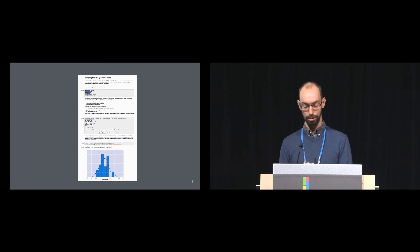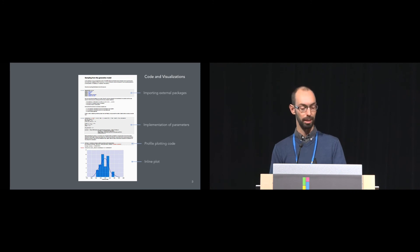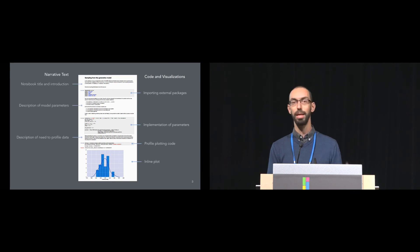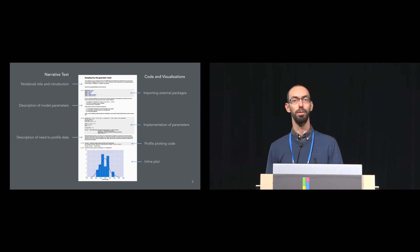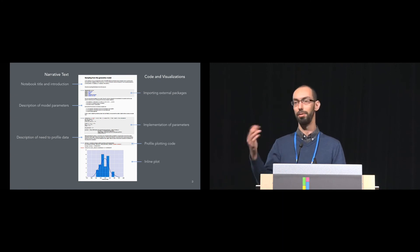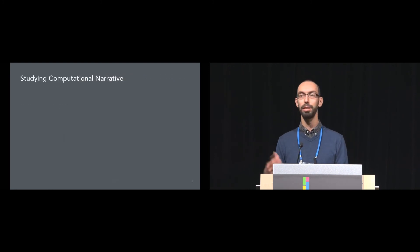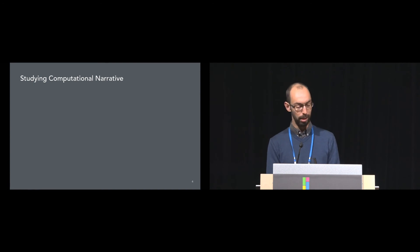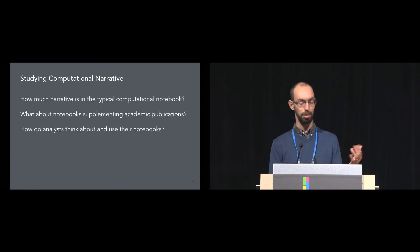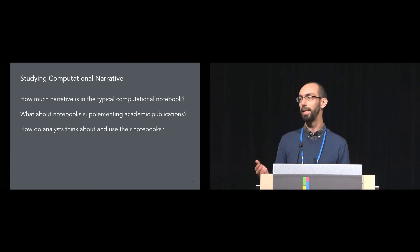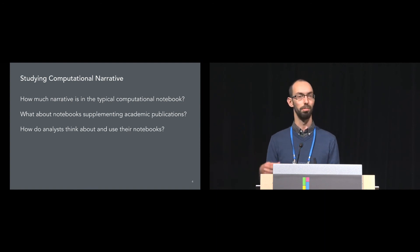Throughout the talk, I'll be calling these computational notebooks. At their core, they let analysts mix code and visualizations that they can write interactively, in line with narrative text describing what that code and those visualizations are doing. We wanted to know how people are using these — in particular, are they using them to write rich computational narratives, both to promote open science and greater flexibility in sharing? We had three sub-questions: how much narrative is in a typical Jupyter notebook? What about notebooks supplementing academic publications? And how do analysts think about and use the notebooks?